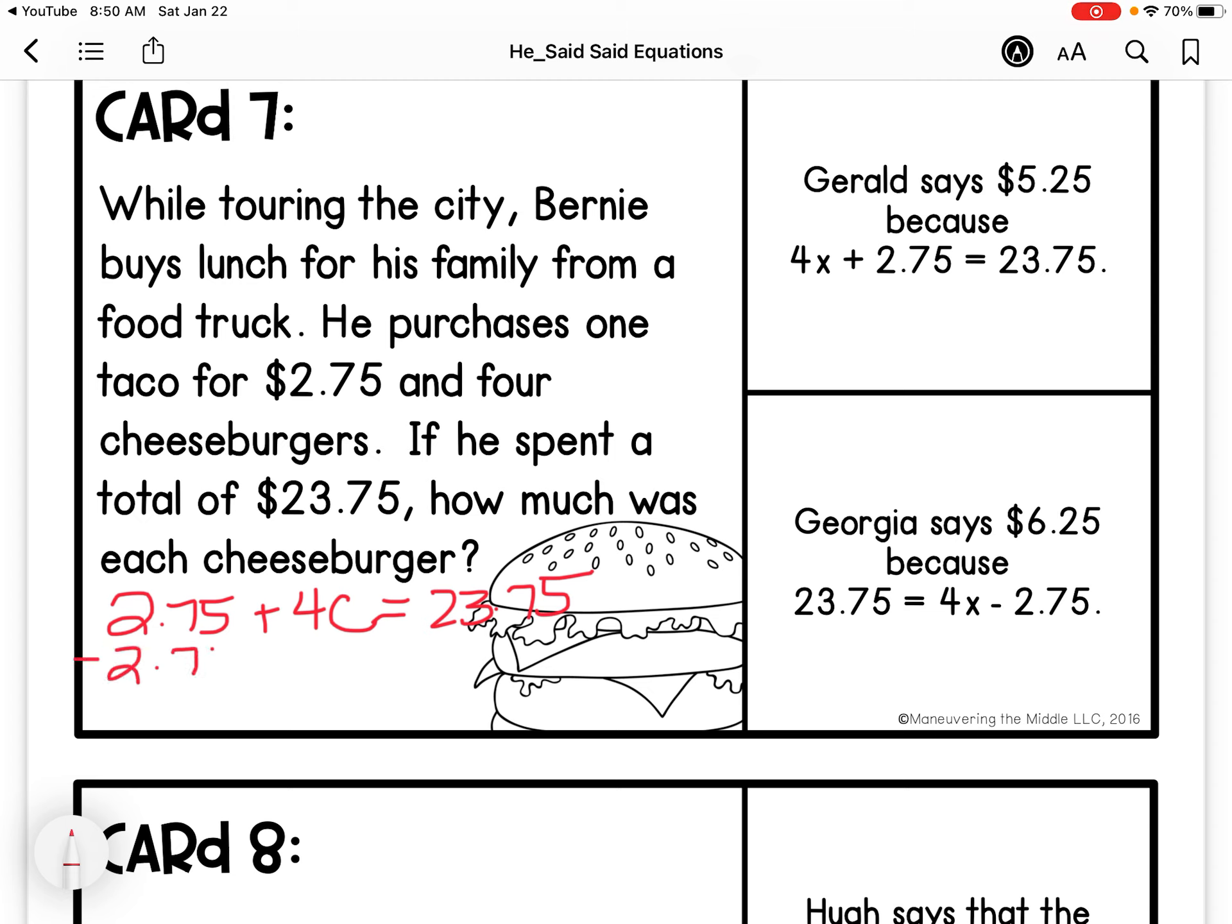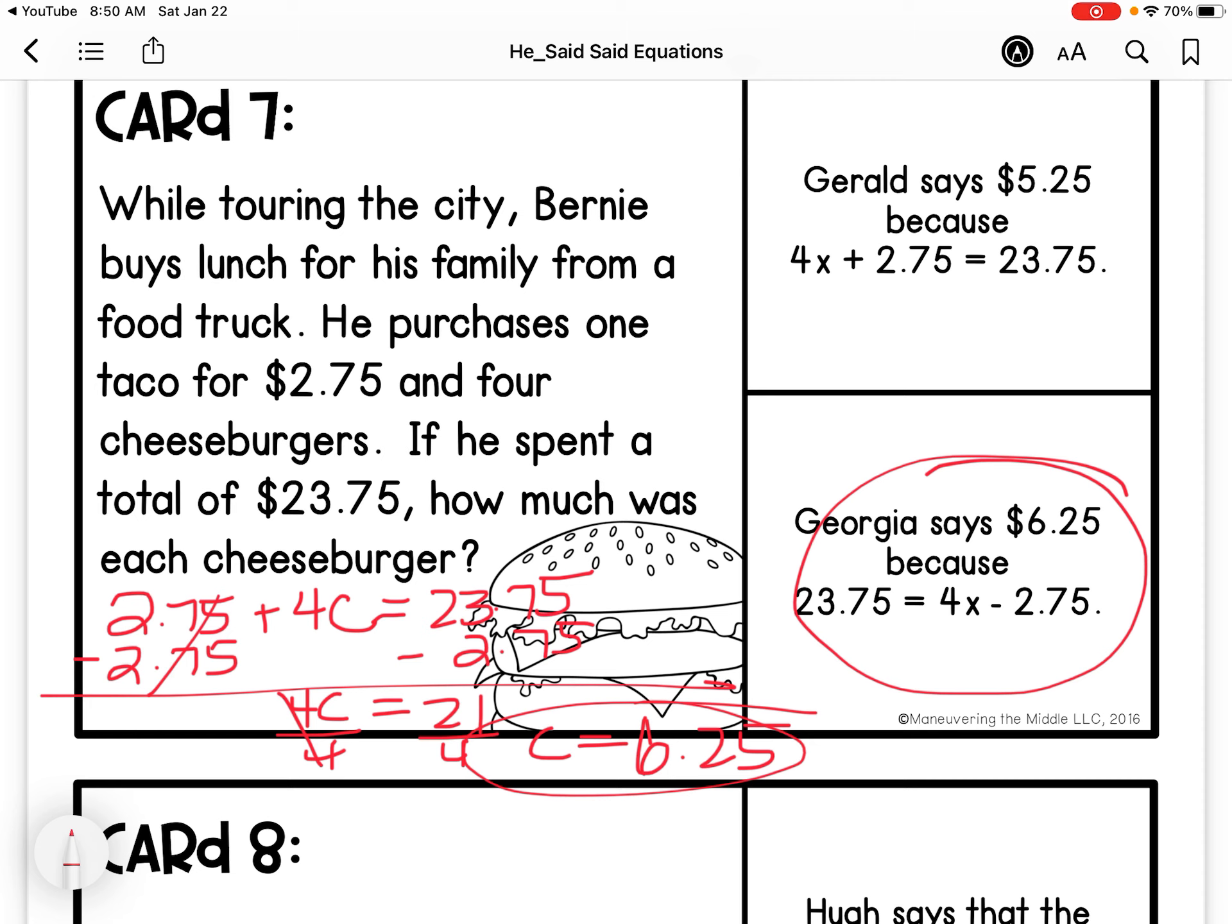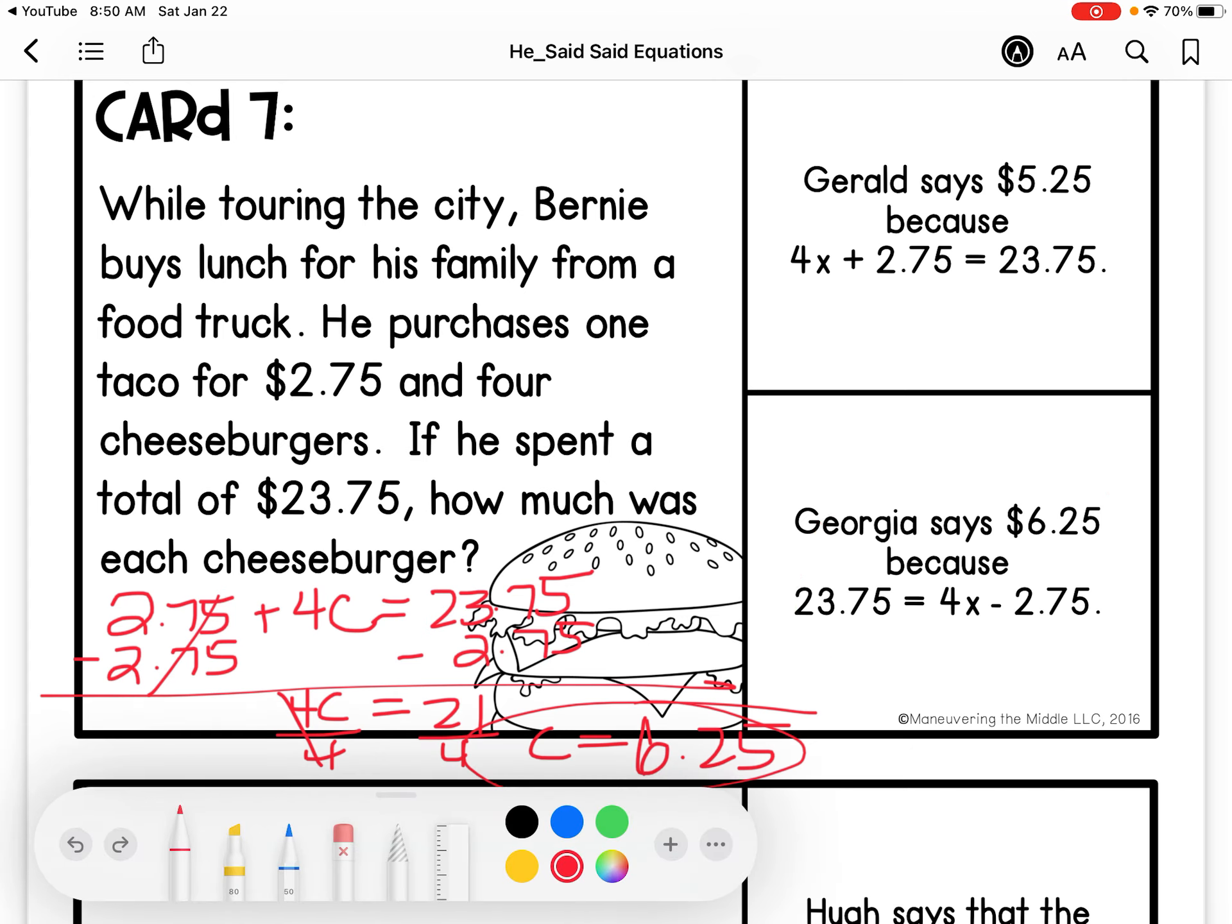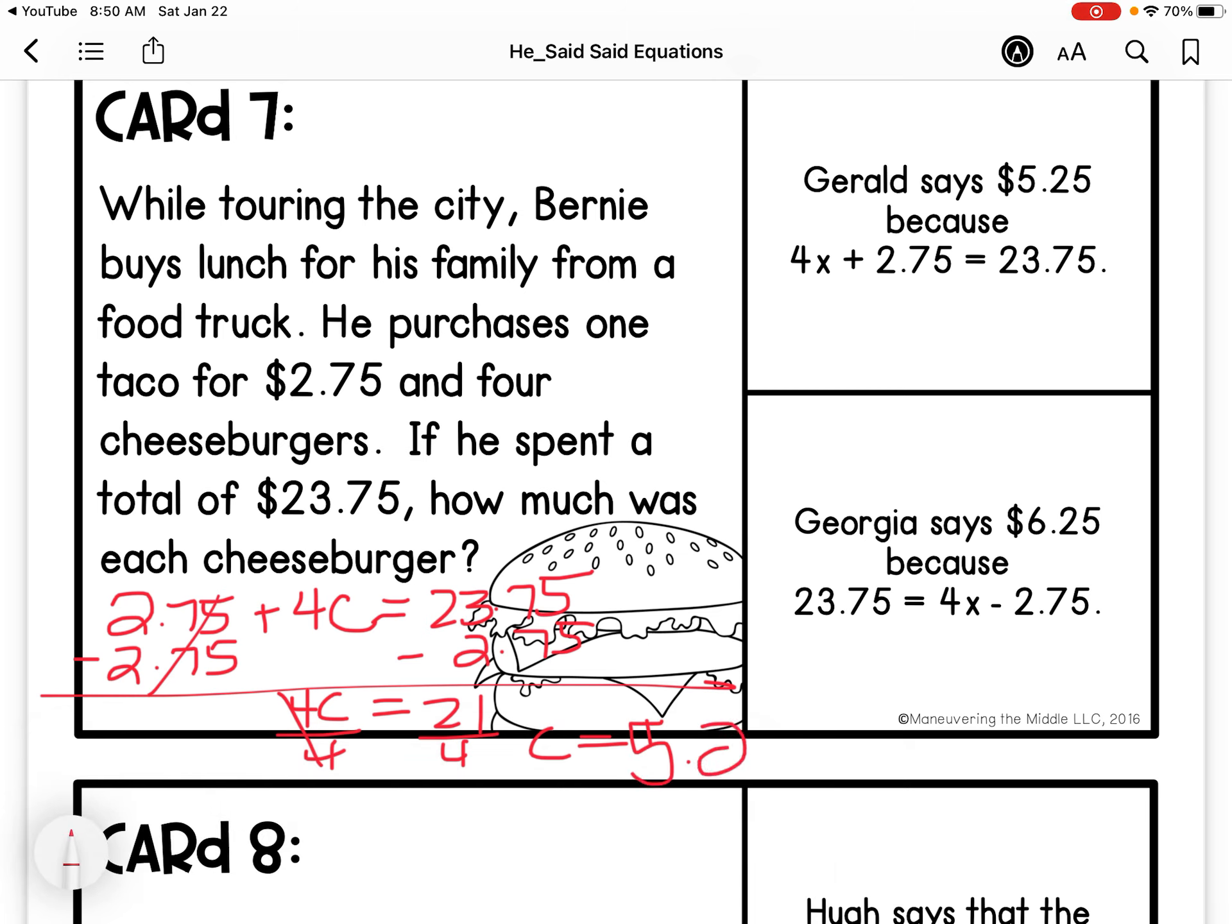So I'm actually going to subtract $2.75 on each side. I get 4C equals 21. I'm going to divide by 4. C equals 5.25.